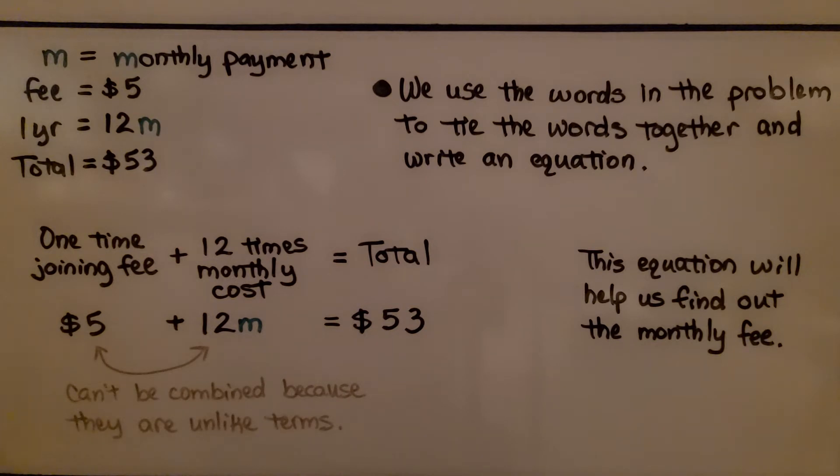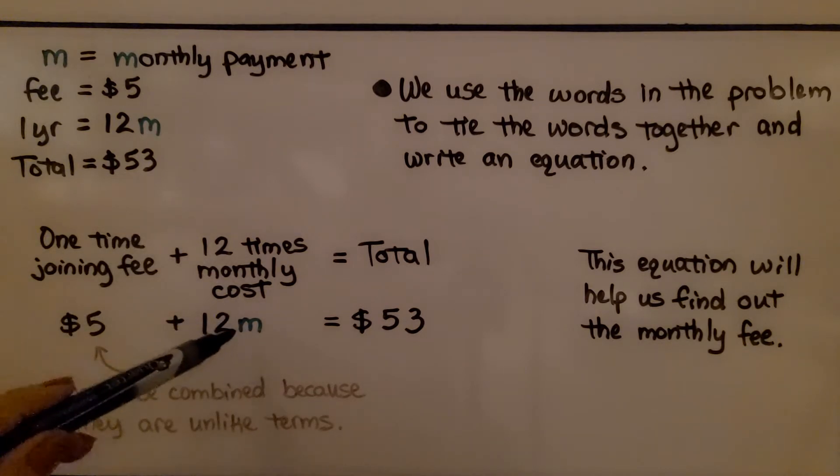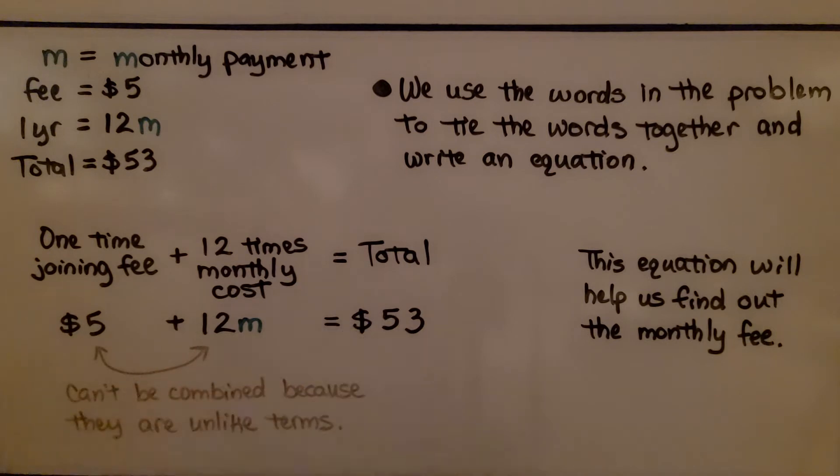We use the words in the problem to tie the words together and write an equation. We have this one-time joining fee of $5. We're going to add it to the 12 times monthly cost, which is our 12M. And we know the total is $53, so it equals $53.